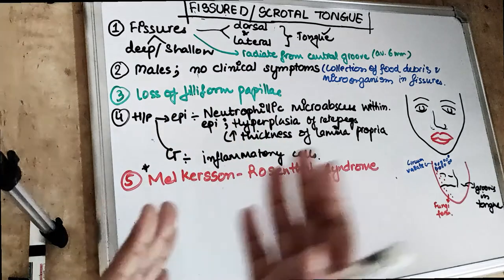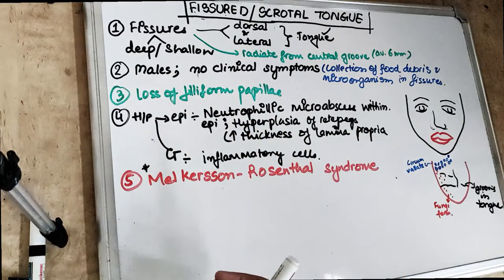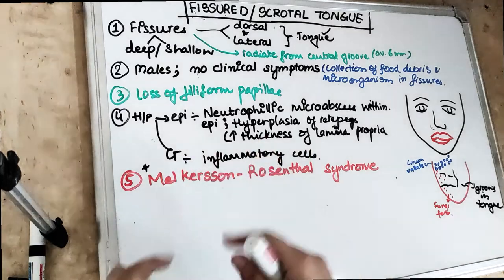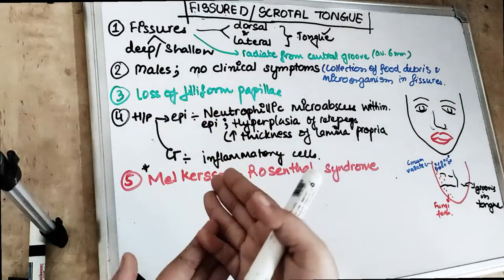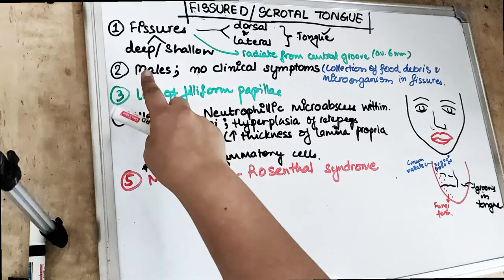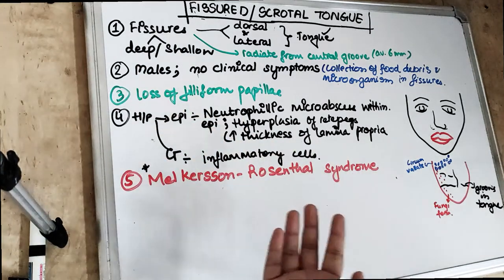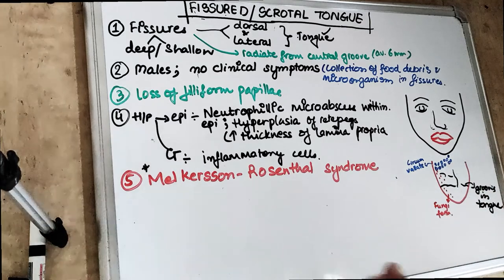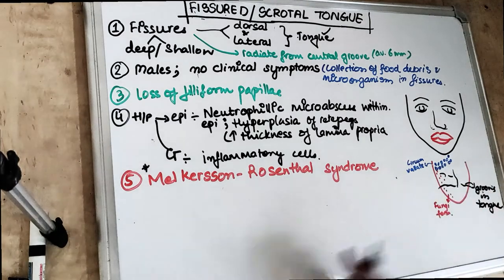So coming to the fissures — there are going to be fissures, meaning grooves, present in the tongue. The tongue will have little cuts. The fissures can be deep or shallow, and they are usually present on the dorsal as well as on the lateral aspect of the tongue.